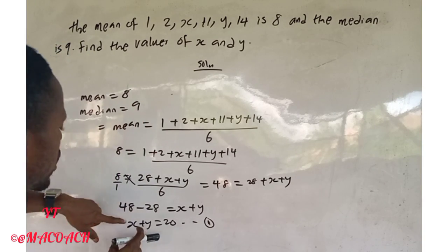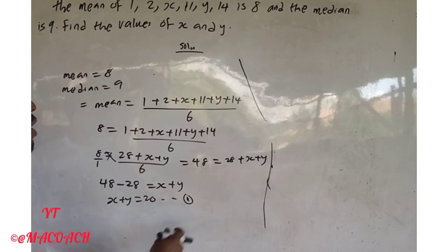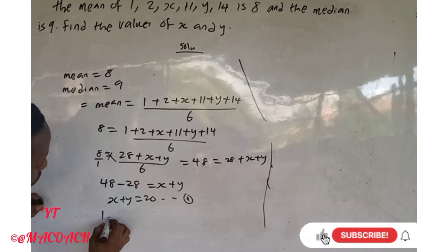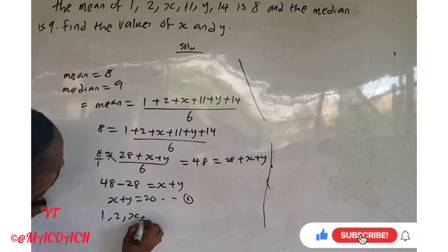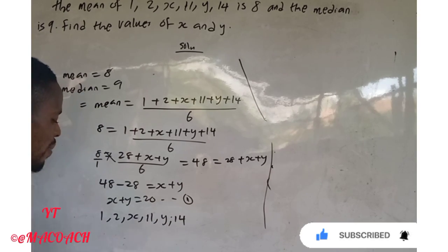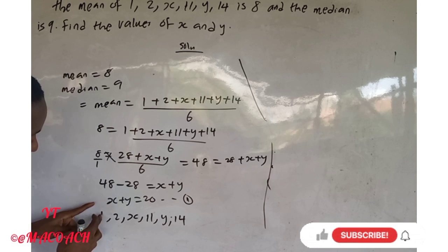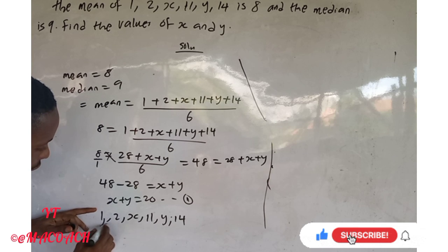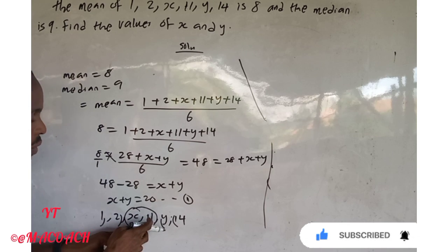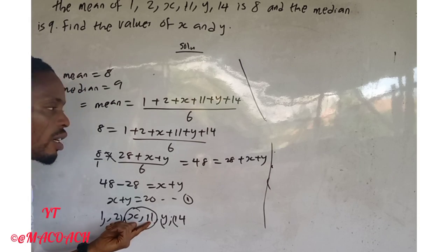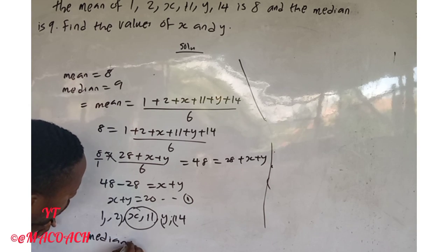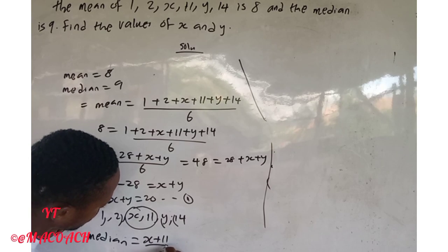Now let's find the median, which is given as nine. We have the data: 1, 2, s, 11, y, 14 — six numbers. For six numbers, the median is the average of the 3rd and 4th values, which are s and 11. So the median = (s + 11) / 2.